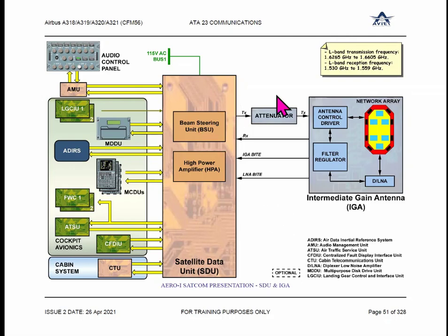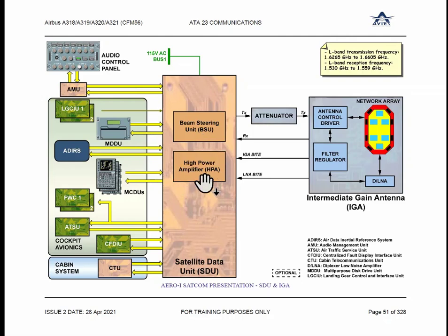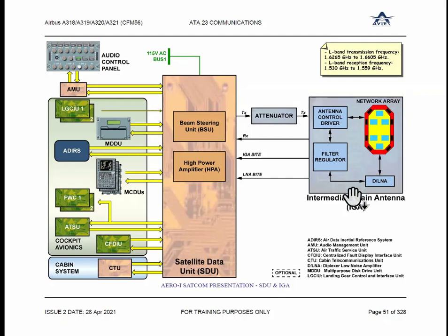As far as installation is concerned, there is only one control unit, which is the SDU — the Satellite Data Unit. Internally it has two functions: one is a beam steering unit, another is a high power amplifier. And there is an antenna — a big size antenna is available on top of the fuselage in the middle section, which is an IGA, Intermediate Gain Antenna.